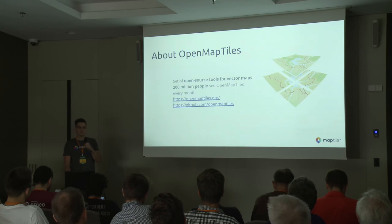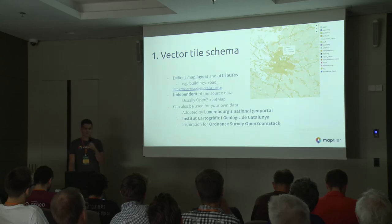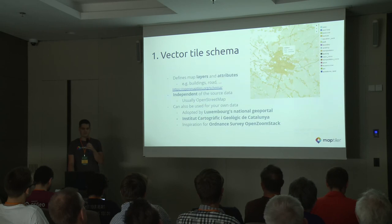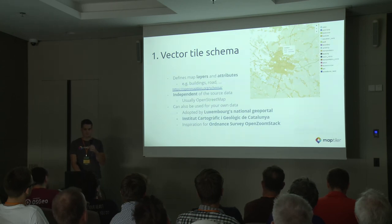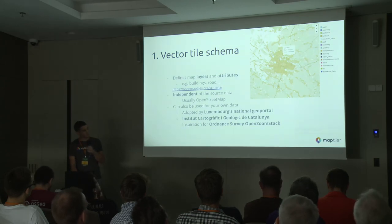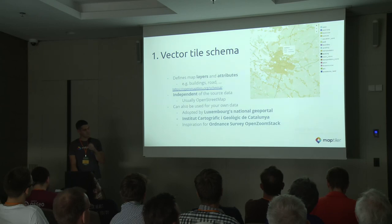There are three main parts of the OpenMapTiles project. Probably the most important part is the vector tile schema, which defines what layers and attributes are in the vector tiles themselves. This is the difference between vector tiles and raster tiles — in vector tiles you actually have the features, their geometry, and their attributes, so there's a lot more that you can see visually, which is also good for interactivity and other things.